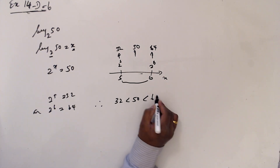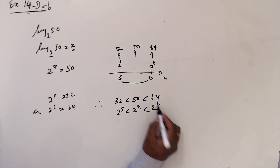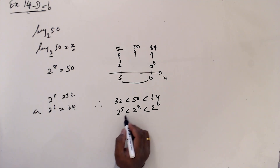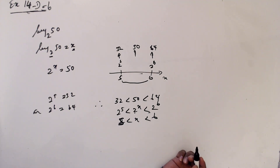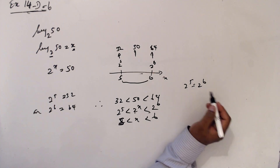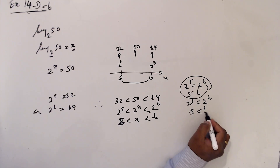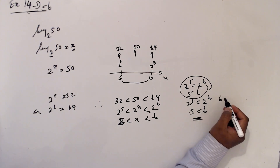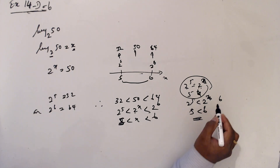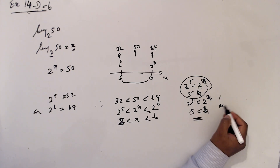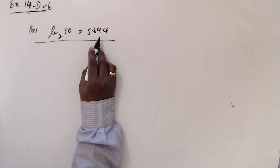We need the answer as 50 — the idea of evaluating it between 5 and 6. So 2 to the power 5 is 32 and 2 to the power 6 is 64. And 32 is less than 50, which is less than 64. 32 means 2 to the power 5, and 64 is 2 to the power 6. Hence 5 is less than x is less than 6 — same base comparison. So part b from the calculator: this is 5.644.